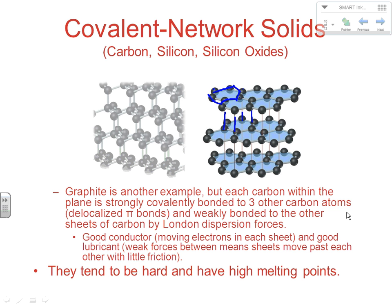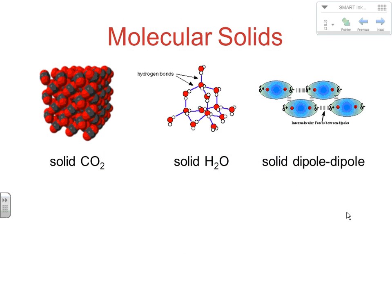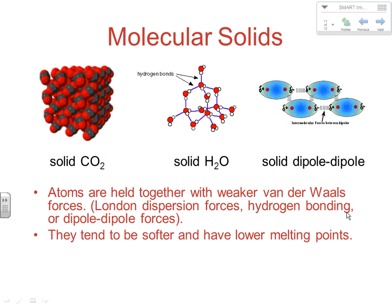In general, covalent network substances are going to be hard. Graphite has hard components and soft components, but diamond itself is very hard. Both have very high melting points because it's really hard to break apart that strong covalent web. Molecular solids are some of our weakest, because they're held together by much weaker Van der Waals intermolecular forces — not intramolecular forces like covalent network, ionic, or metallic bonding — so they tend to have much lower melting points and be much softer.